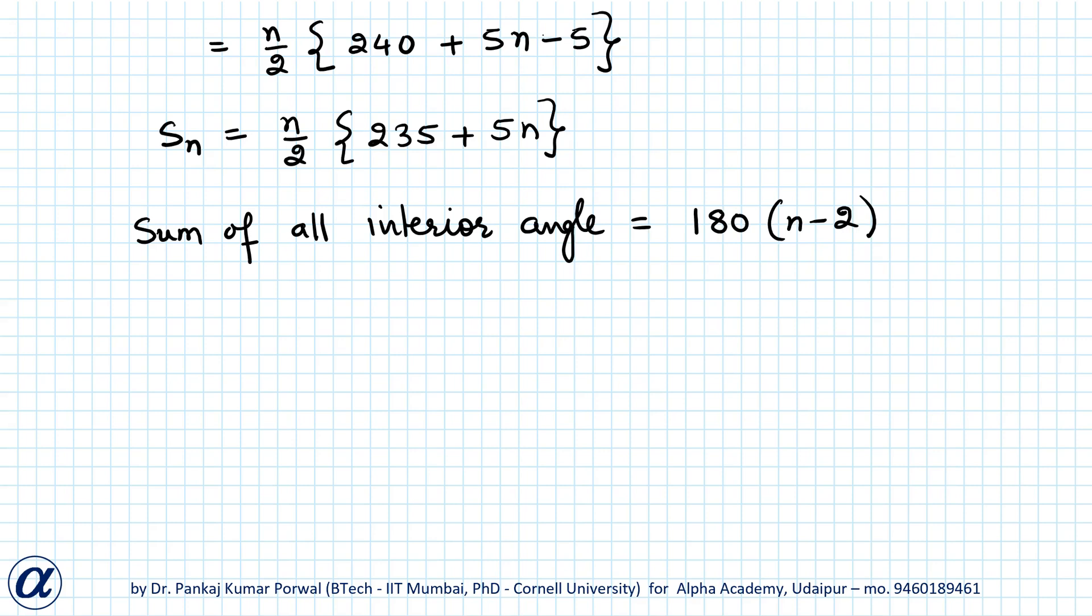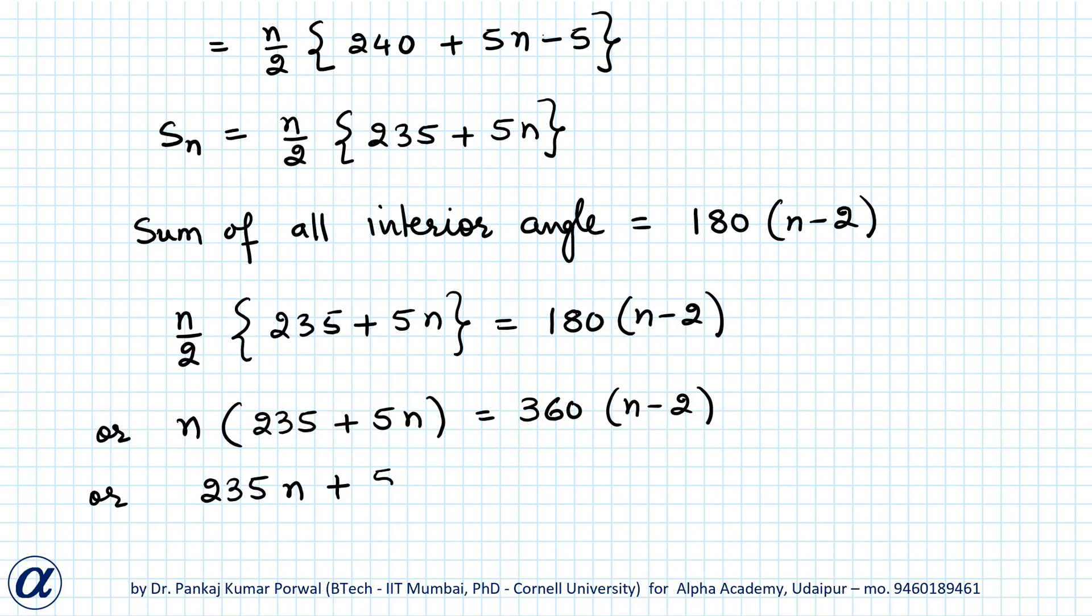So this Sn should equal the sum of all interior angles. So n by 2 times 235 plus 5n should equal 180 times n minus 2. I can simplify this by cross-multiplying: n by 2 times 235 plus 5n equals 180 times 2, which is 360 times n minus 2, or 235n plus 5n squared equals 360n minus 720.